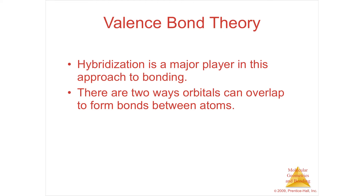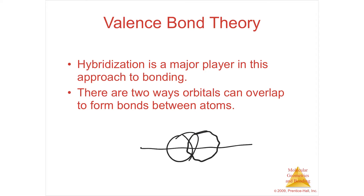Section 9.6: Multiple Bonds. Everything up to now has been, if I had a hydrogen and a second hydrogen and they overlap, they're going to overlap symmetrically about an internuclear axis. Here's the axis that goes to the center of each one, and you're going to get a symmetrical region of overlap.